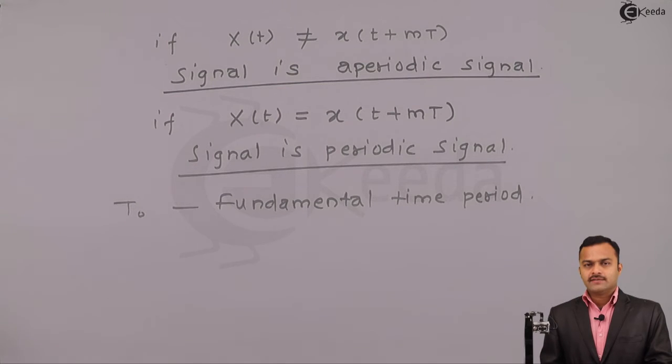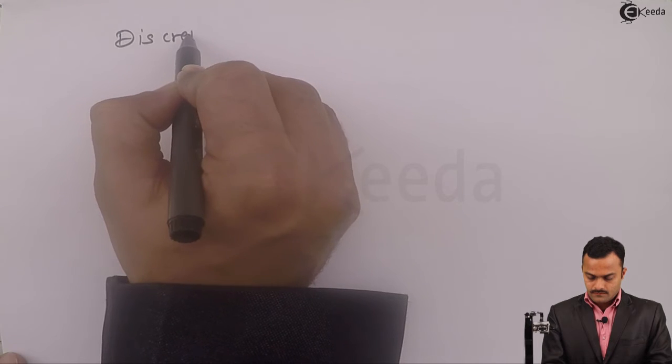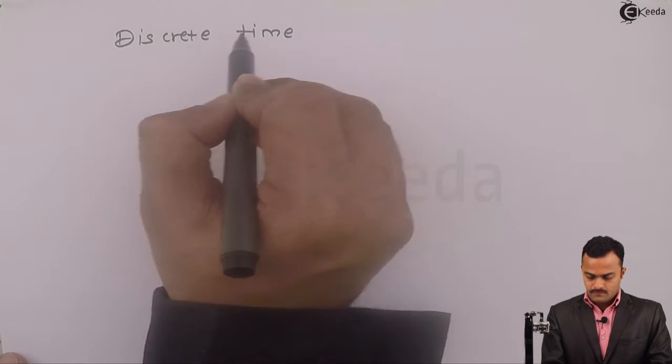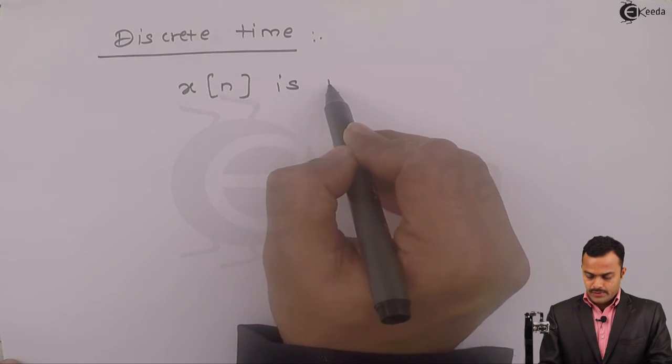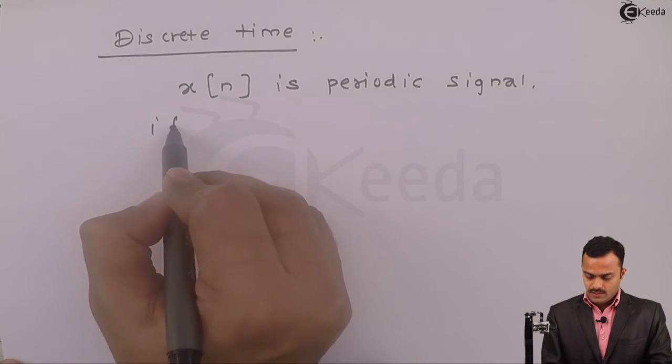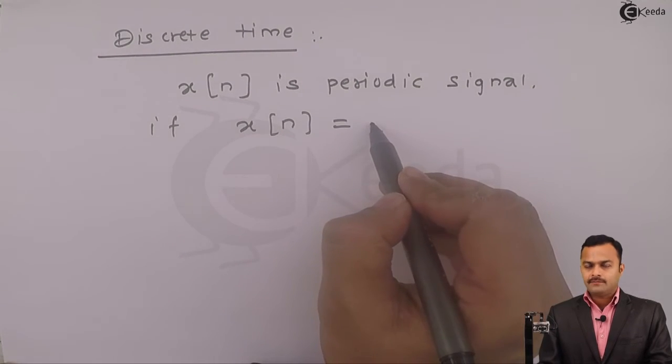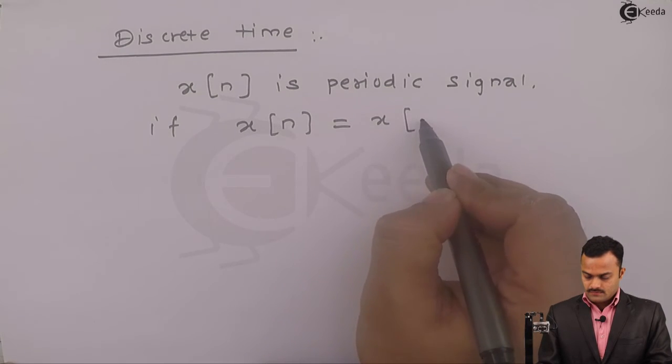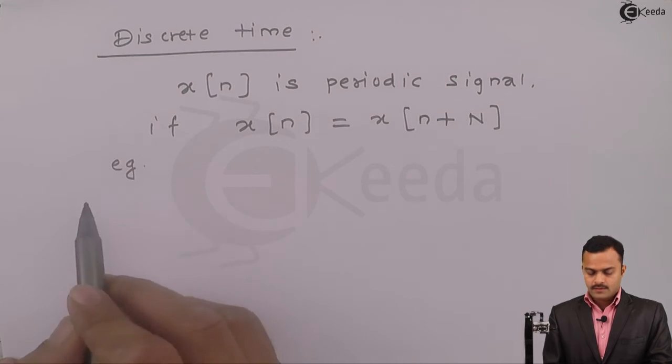So this is what we have seen for a continuous time signal. The same thing can be true for discrete time. So for discrete time, x[n] is periodic if x[n] equals x[n + N]. Then the signal can be considered as periodic.